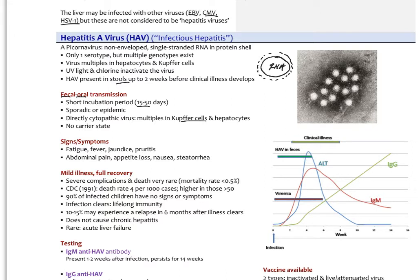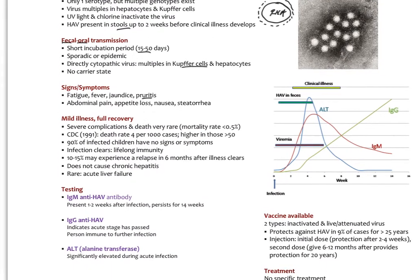The signs and symptoms are variable, but typically fatigue, fever, jaundice, pruritus, abdominal pain, appetite loss, nausea. People can be really sick, look really jaundiced, vomiting, can't get out of bed.